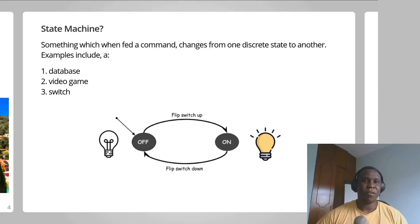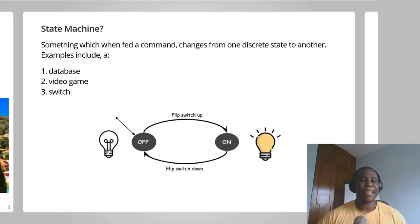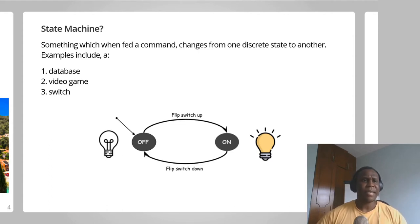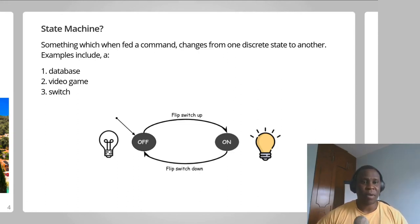State machine replication involves sharing commands intended to be applied to state machines in a manner that preserves the number and the order of these commands. The assumption is that if commands are shared amongst 10 individuals, each possessing the same kind of state machine, after each of the individuals has applied the shared commands on their state machines, all the state machines will be in the exact same state. In the state machine replication approach, consensus is achieved when a majority of the nodes agree on the commands to apply against the individual state machines and what order these commands should be applied.